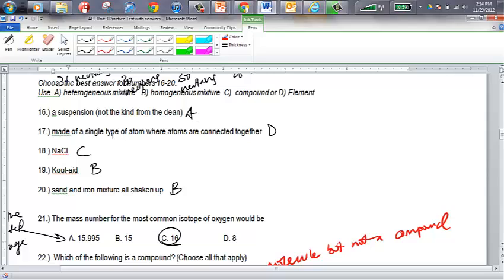Okay, a suspension is a heterogeneous mixture. That's number 16. Number 17, a single type of atom where atoms are connected together. That would be an element situation. NaCl is a compound, so C is your answer there. 19, that's an example of a solution, and a solution is a homogenous mixture, so B is your answer for number 19. And number 20,